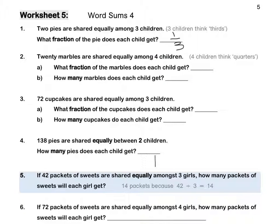Four children — immediately think that we are sharing into quarters. What fraction of the marbles does each child get? Each child is going to get one quarter of the marbles because there are four children. One quarter of 20 marbles is equal to 5 marbles each. Pause this video to complete Questions 1 to 4 by yourself.